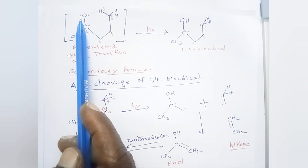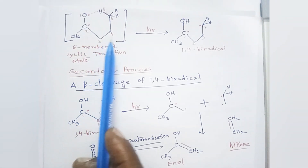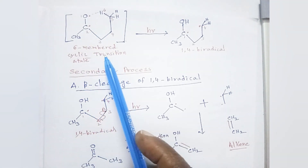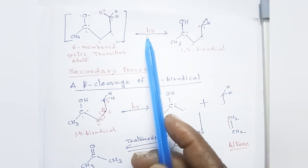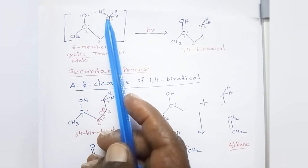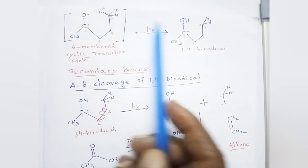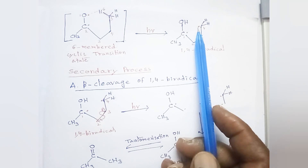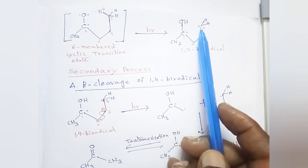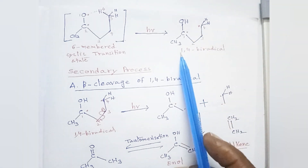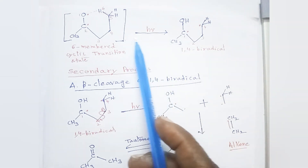This gives us a six-membered cyclic transition state. Counting from oxygen: 1, 2, 3, 4, 5, 6, including the hydrogen — this is a six-membered transition state. The gamma carbon-hydrogen bond then cleaves and the hydrogen attaches to oxygen, resulting in a new radical on the gamma carbon. So we get a 1,4-biradical — positions 1, 2, 3, 4. This is the primary process.